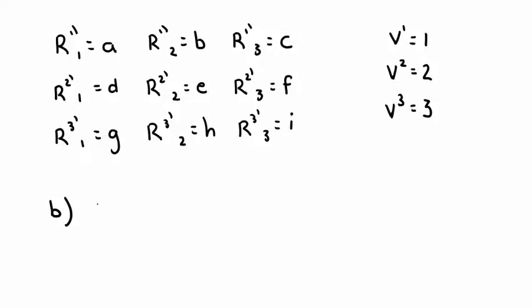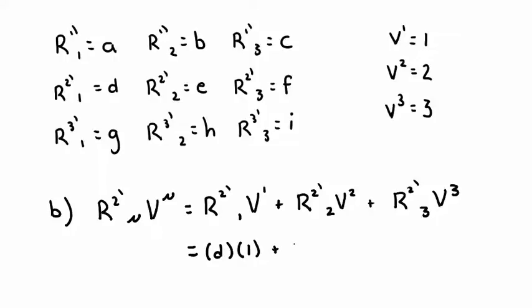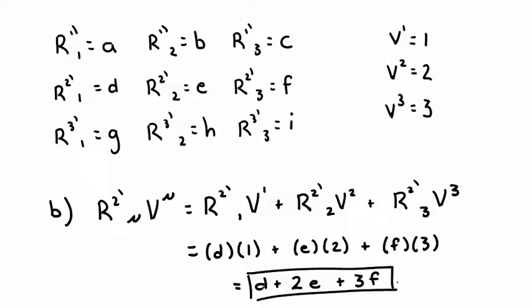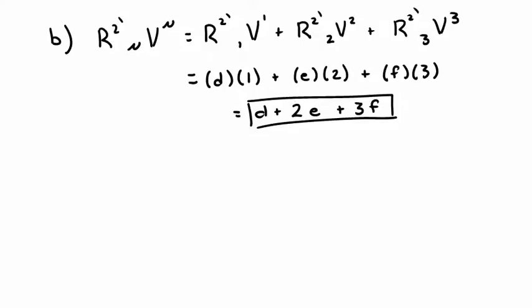Part B asks us to find R2' mu V mu. Here, mu is a contracted index, which means we must sum over all its allowed values. Since we have a 3x3 matrix, mu can be 1, 2, or 3. When we sum over mu, the result is R2'1 V1 plus R2'2 V2 plus R2'3 V3. Again, we can look at the list above and plug in some values. Our final answer tells us that R2' mu V mu equals D plus 2E plus 3F.